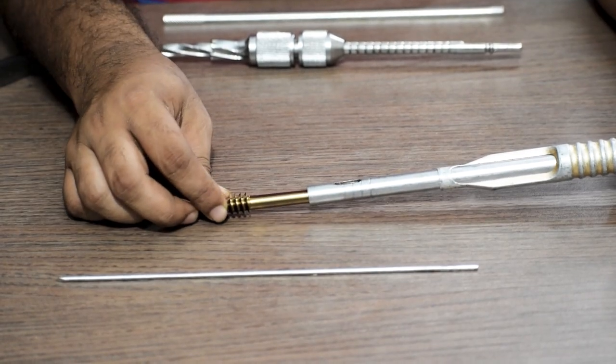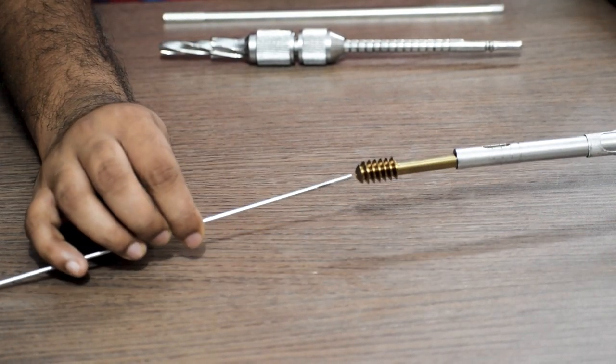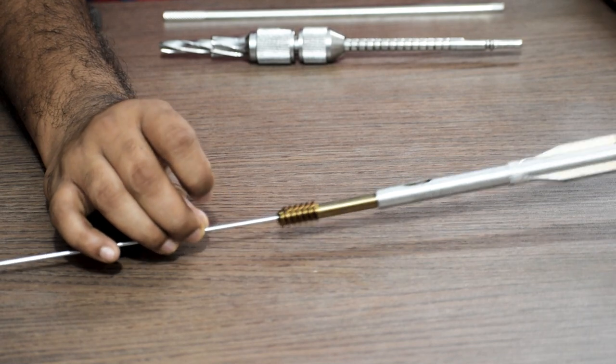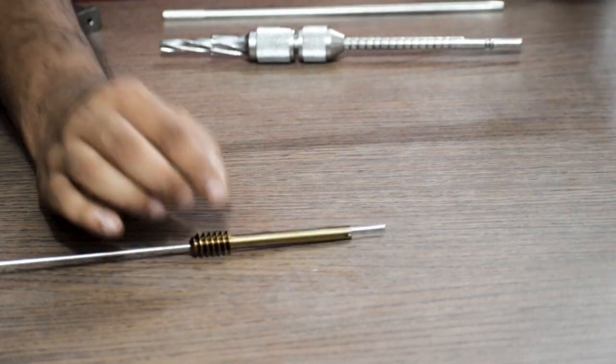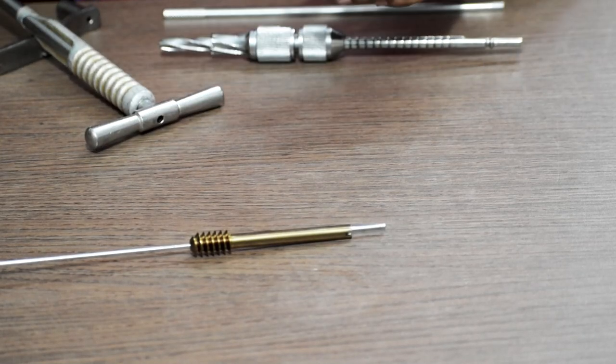Once the lag screw is attached, we insert the lag screw through the guide wire and then remove the T-handle. The lag screw stays inside.